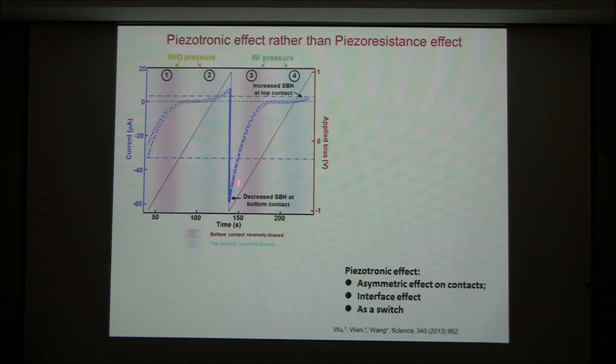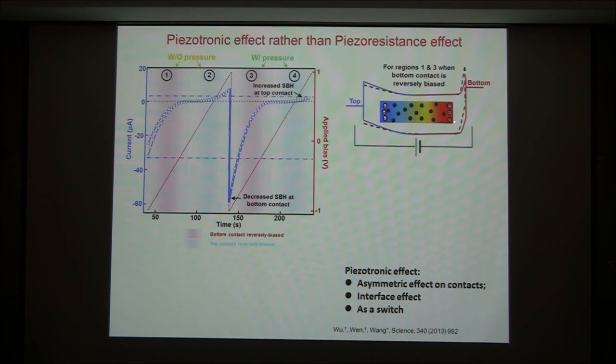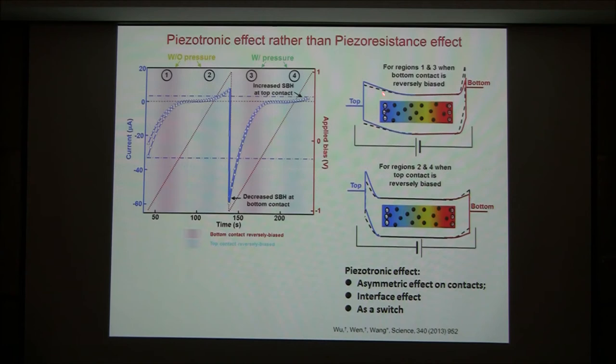On the reverse bias, the current increases. On the forward bias, it falls. This asymmetric change is because of the asymmetric distribution of charge at the two ends. This is non-symmetric — which way the current flows depends on the local polar charge sign, which dictates the transport across this interface. In such a case, you can manipulate the transport. If this is forward bias and this is reverse bias, you change the barrier height differently, changing the characteristic of the current.